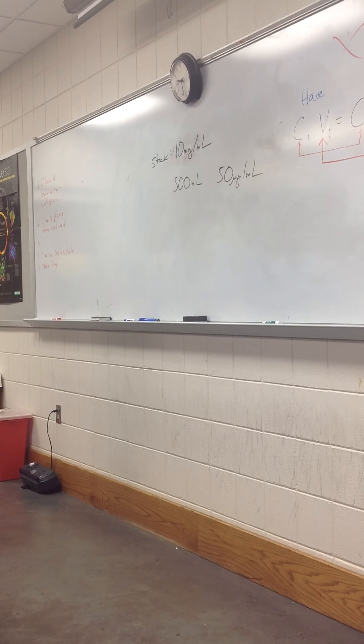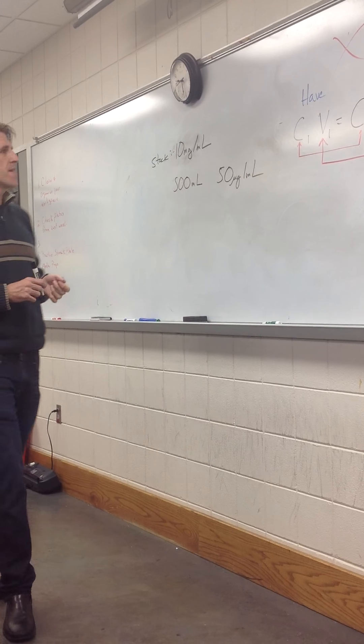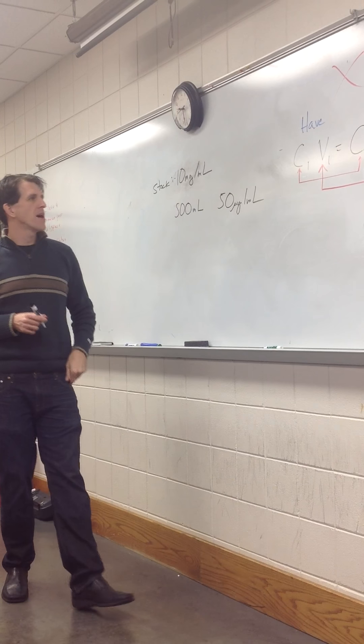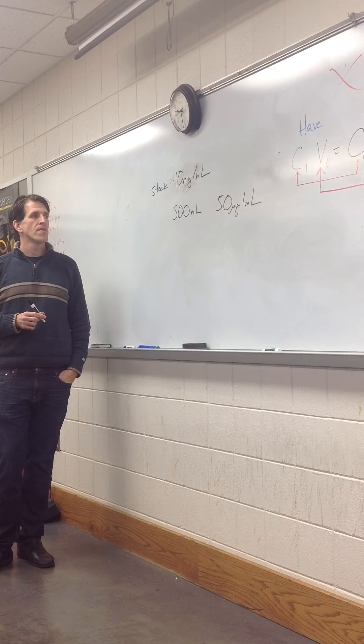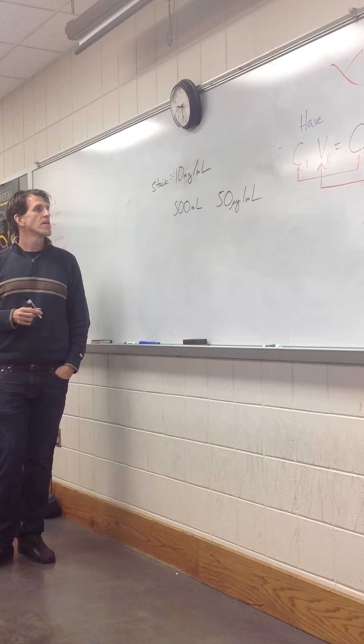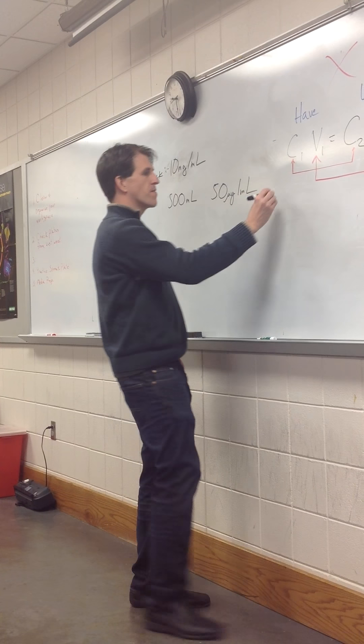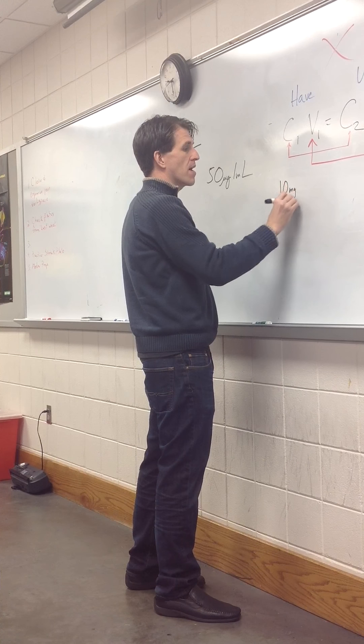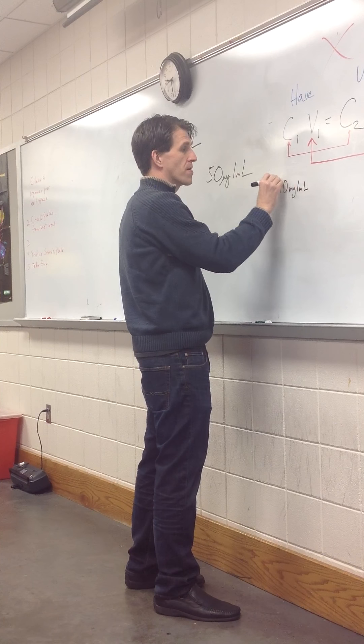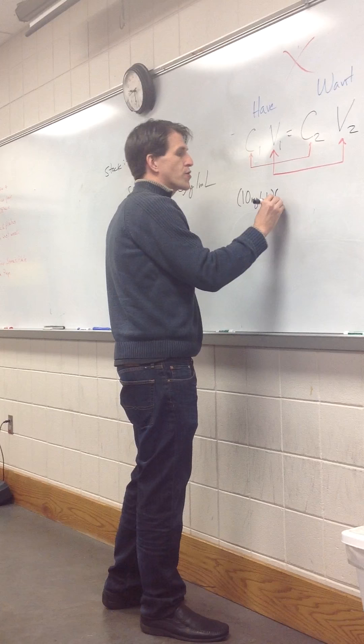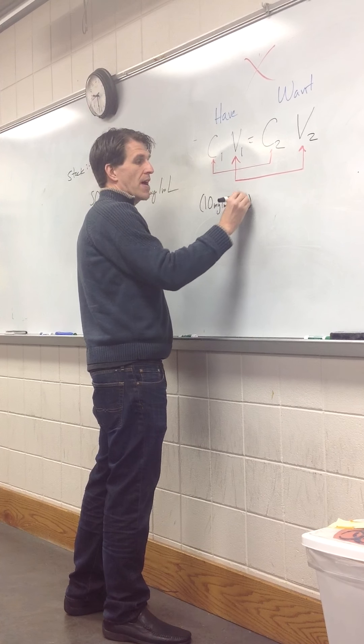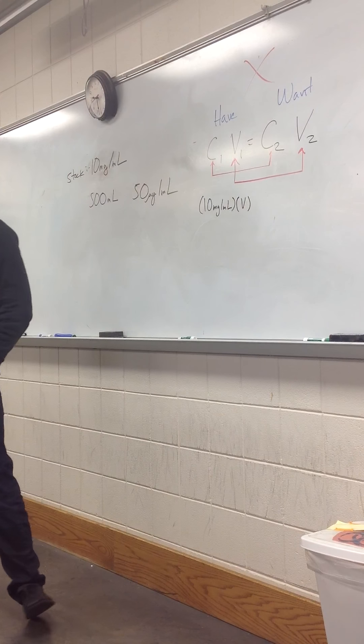Alright, so let's see what we've got here. What is our initial concentration? 10,000, well, let's just say 10 milligrams per milliliter. We'll come back to that conversion in a second. Our initial volume, we don't know it, right? That's our question today.